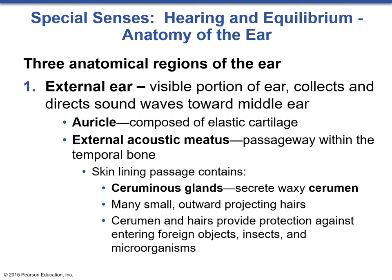There is the external acoustic meatus, which you may remember from Biology 177 when we talked about the skull. The external acoustic meatus is simply the passageway within the temporal bone that leads into the inner ear. There is skin lining this passageway that contains ceruminous glands, which secrete waxy cerumen — more commonly known as earwax. There are many small outward-projecting hairs, and the cerumen and hairs provide protection against foreign objects, insects, and microorganisms.